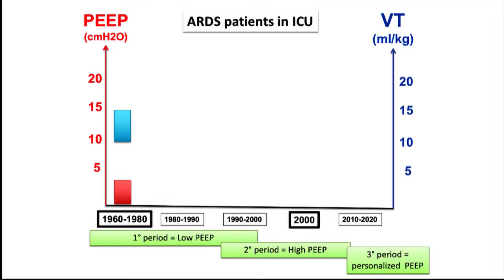That means you asked about zero PEEP — zero end-expiratory pressure. This was probably used for several years. But today we should consider absolutely a minimal level of PEEP for everybody, including both operating room patients, ICU patients, and normal lung. You cannot use zero PEEP today — that is my message. Absolutely agree, maybe except massive pulmonary embolism and acute pulmonary — but only very few patients.